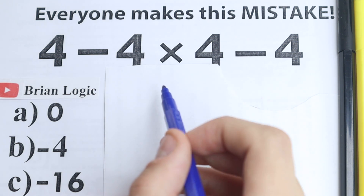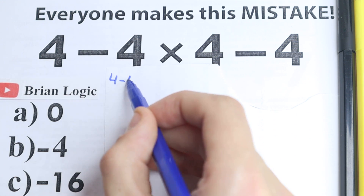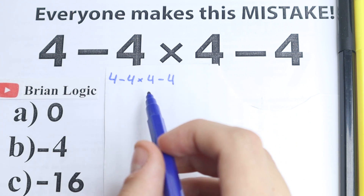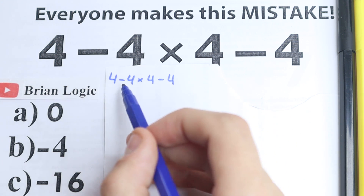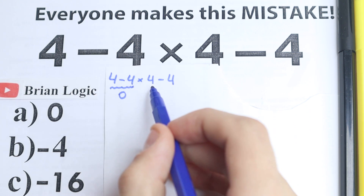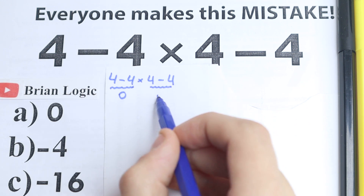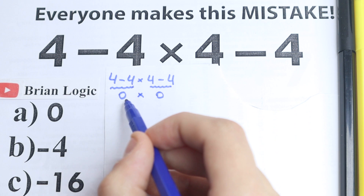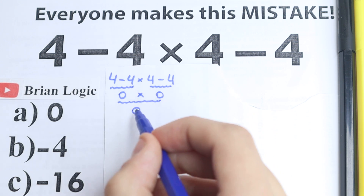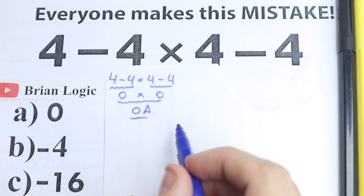First of all, I want to start with this explanation. A lot of students make this common mistake — they say: okay, 4 minus 4 times 4 minus 4, so 4 minus 4 equals 0, and 4 minus 4 on the right also equals 0, so 0 times 0 equals 0. They go with option A and say that's the correct answer.